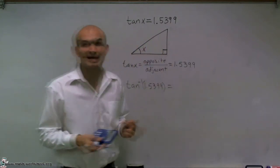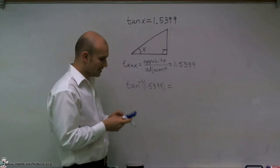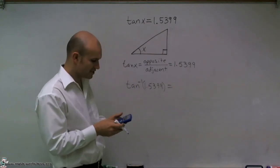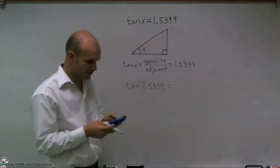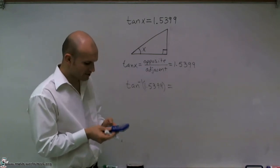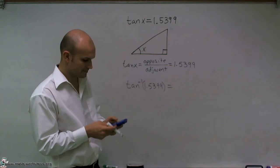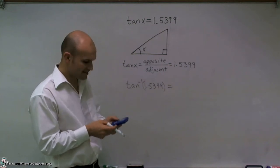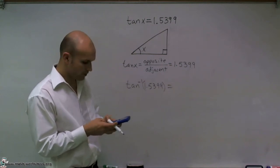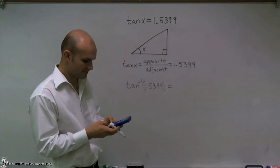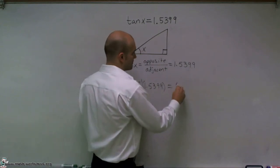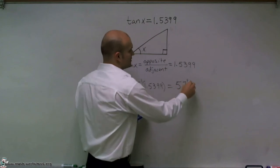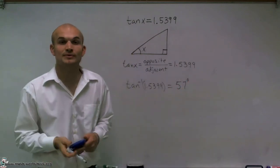What I'll do is I'll just take a scientific or graphing calculator. And all you simply need to do is make sure that if you're trying to find your degrees that you're in degree mode. And then what I'll simply do is I'll just take inverse tangent of 1.5399. And it will give me 57 degrees when I round it up to the nearest degree.